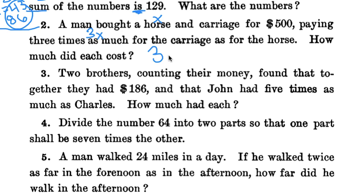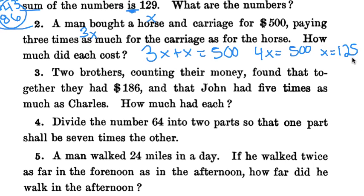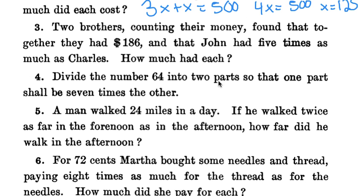So we know 3x plus x is equal to 500. 3x plus x is 4x is equal to 500. Divide both sides by 4 and we get x is equal to 125, the thing we know, the smaller number that we know less about. 125 is x is the horse. Three times 125 is 375 for the carriage.